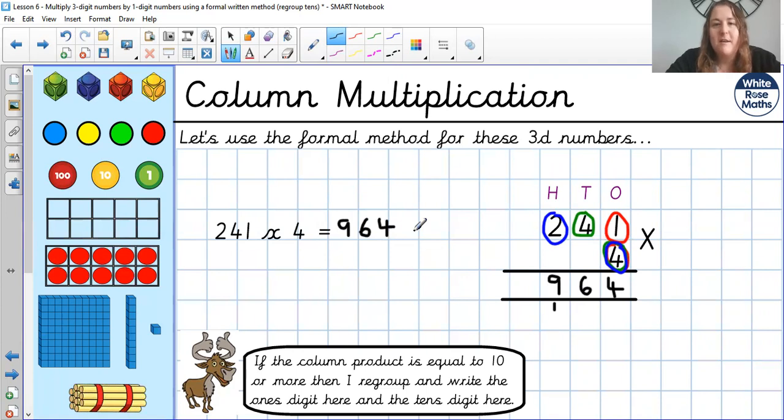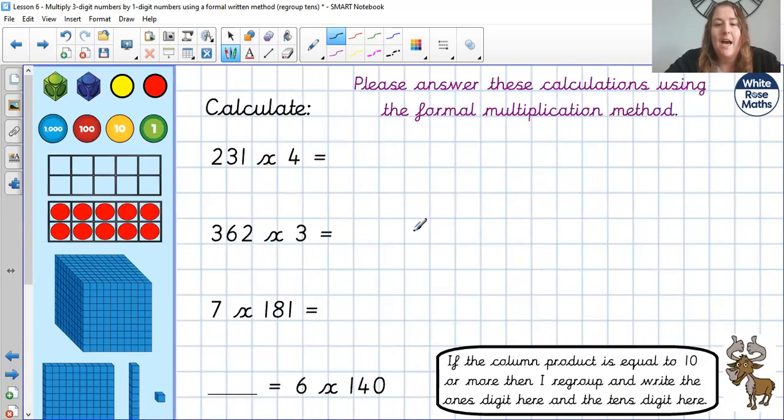Okay hopefully you didn't find those too tricky and they are very similar to yesterday. It's just regrouping in that different column. If you would like to have a go at these that would be brilliant. Please make sure you're using that formal written method and you are noticing today that all the regrouping is happening in that tens column. Good luck at those and we will be back in a moment to go through the answers.